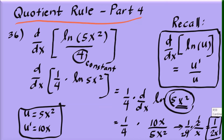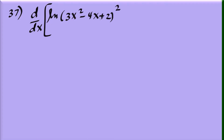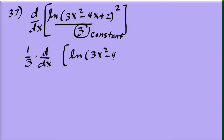Problem 37: differentiate the natural log of the quantity 3x squared minus 4x plus 2, all squared, divided by 3. Again the denominator is simply a constant, so we rewrite this as one-third times the derivative of the natural log of 3x squared minus 4x plus 2, squared.